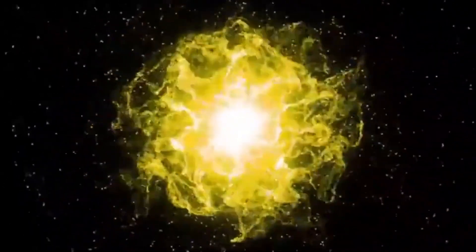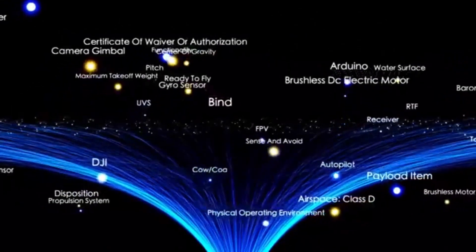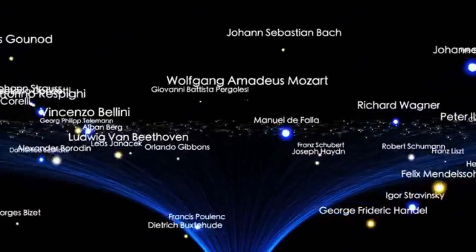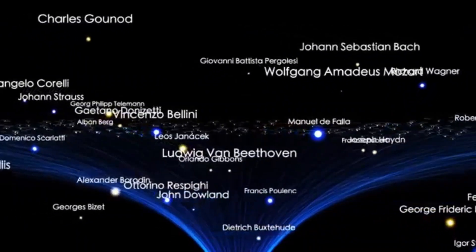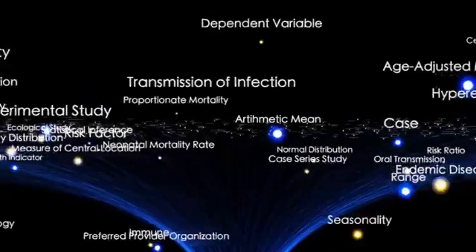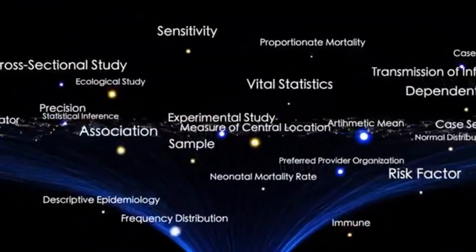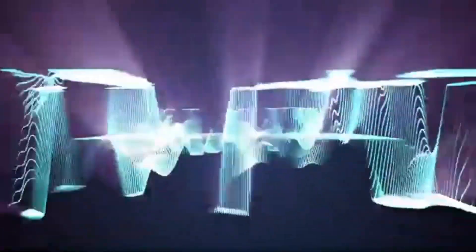These numbers reflect the staggering scale and isolation of star systems across the cosmos. Let's now consider Betelgeuse, a star located roughly 640 light-years from Earth. This means that the light we see from it tonight actually began its journey to us 640 years ago, around a century before Christopher Columbus set sail for the New World. That light has traveled all this time through space to finally reach our eyes today.